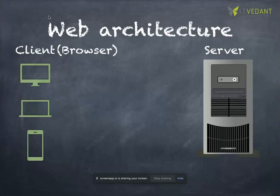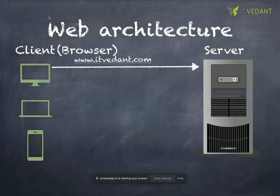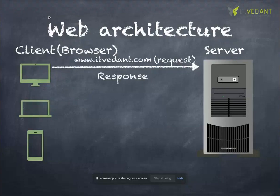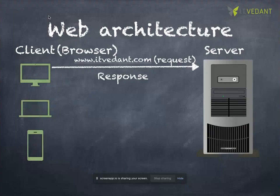On the server, all the files are located, and the server processes all requests made by the client. For example, if I request www.itvedant.com, the server processes that request and sends back a response. Similarly, when you ask to visit www.facebook.com, the server responds by giving you a login page or home page — that's how the request-response cycle happens.